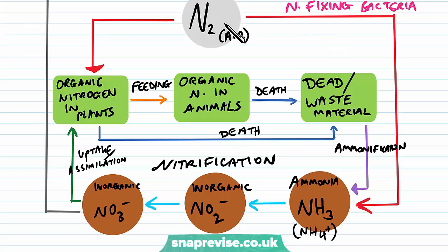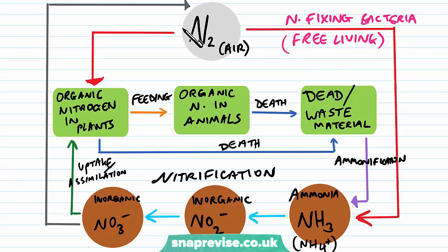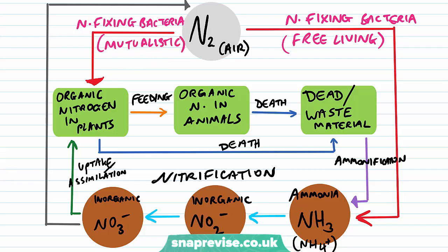Nitrogen in the air can be fixed by two types of bacteria. We can have free-living nitrogen-fixing bacteria turning nitrogen to ammonia. Or we can have nitrogen-fixing bacteria turning it straight into organic molecules like amino acids — these would include the mutualistic bacteria. And the process of turning inorganic nitrate back into nitrogen in the air is denitrification.